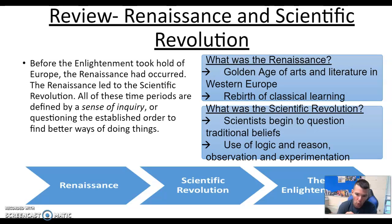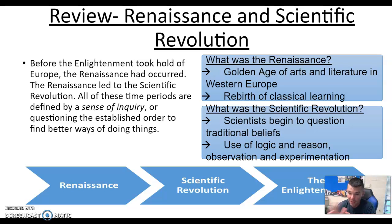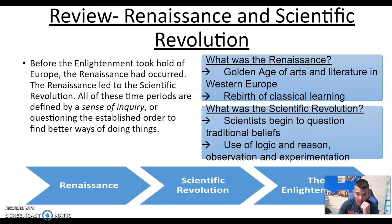They wanted to learn how things operated instead of being told how things operated. So what was the scientific revolution? Scientists began to question traditional beliefs. The church and the king had all the power and all the knowledge back then. These scientists started using technology to question those old traditional beliefs taught by the king and the church. They wanted to find truth for themselves, so they used observation, experimentation, and science to prove or disprove things.